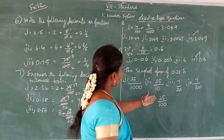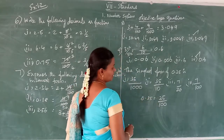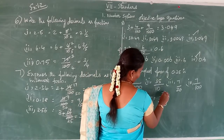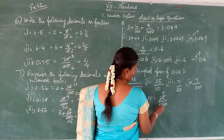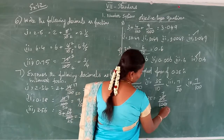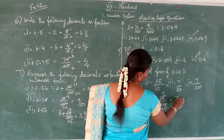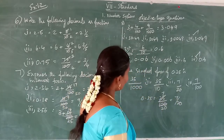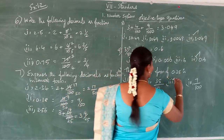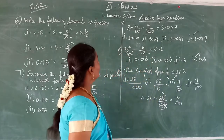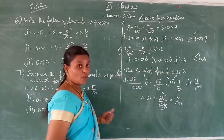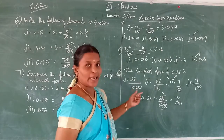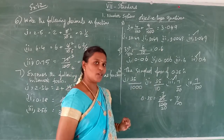The simplest form of 0.35: write as 35 by 100. Cancel with the 5 times table — 35 divided by 5 is 7, 100 divided by 5 is 20. So the answer is 7 by 20. The third option is correct. We have completed Exercise 1.2 — do the same model examples yourself. Thank you, children.